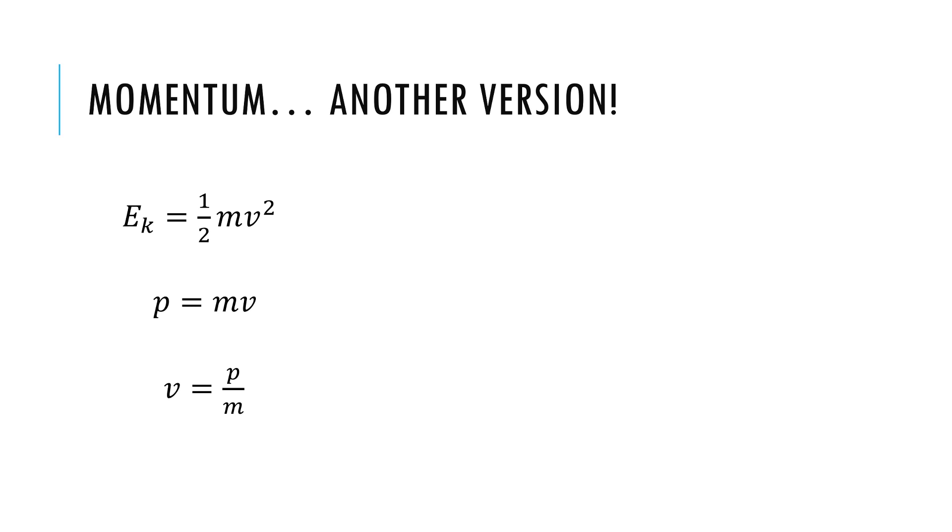If I wanted, I could isolate and solve for velocity in terms of momentum and mass, I could plug that into my kinetic energy equation. I notice some cancellation of mass here and I end up with this equation: kinetic energy is momentum squared over twice the mass of the object moving whose kinetic energy I care about.